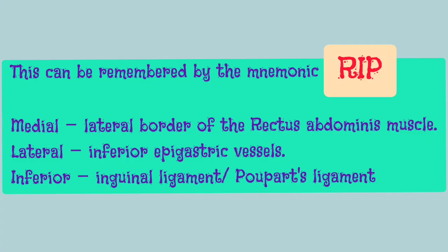This can be easily remembered by the mnemonic 'RIP': R stands for the rectus abdominis muscle's lateral border, which is the medial border of the triangle; I stands for inferior epigastric vessels; and P is for Poupart's ligament, which is another name for the inguinal ligament.